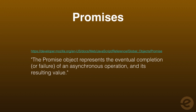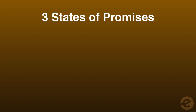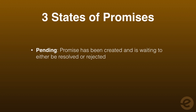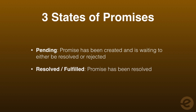A promise is a built-in object type that, according to Mozilla Developer Network, represents the eventual completion or failure of an asynchronous operation and its resulting value. A promise object can be in one of three states: pending, waiting to resolve or fail; fulfilled, when the operation resolves or is already resolved; and rejected, when the operation fails or has already failed.